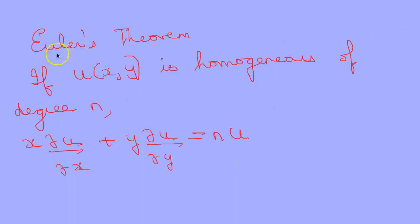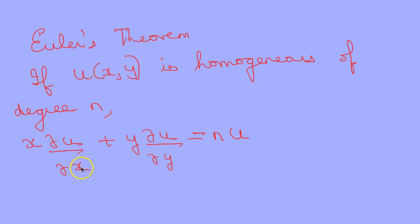Now, on the basis of homogeneous functions we have Euler's theorem, which states that if u(x, y) is homogeneous of degree n, then x · (∂u/∂x) + y · (∂u/∂y) = n·u.